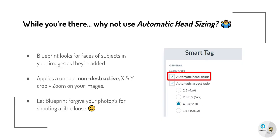And while you're there, why not use automatic head sizing? Blueprint can look for the faces of subjects in your images as they're added in. It applies a unique, non-destructive XY crop and zoom on your images. Let Blueprint forgive your photographers for shooting a little loose.